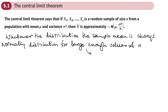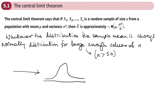Now what do we mean by large enough? Well, normally if our sample size is greater than 50. So basically, whatever distribution we have, if we take lots of different samples of size N — and ideally we want N to be greater than 50 — then the mean of all those samples is also normally distributed.